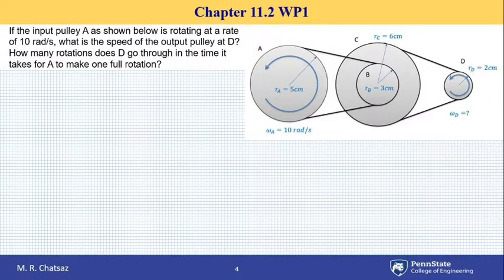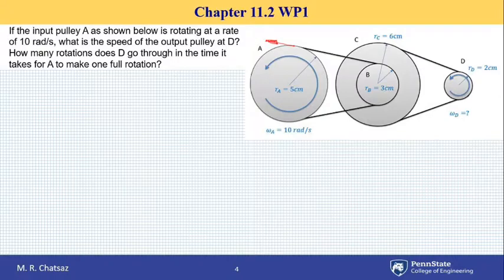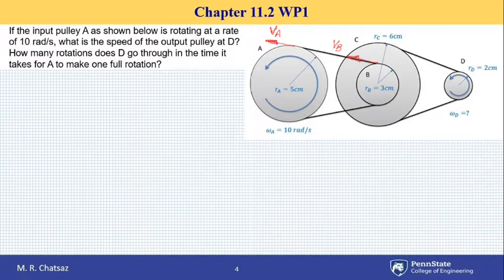Let's consider some kinematics formulas and see how we can deal with this situation. I want to draw the linear velocities of key points. If I consider this point of pulley A, this point has a velocity I call V_A. V_A can easily be written as R_A times omega_A. Observe that this other point of the same belt, whose length is constant, has the same velocity — I call this V_B.